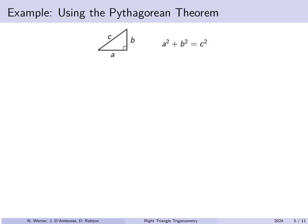So we have a right triangle with sides labeled A, B, and C, where the hypotenuse is C. Then A squared plus B squared equals C squared.